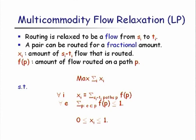We also have a variable F(P) for every SiTi path P, indicating how much flow is carried on path P. The goal is to maximize the sum of Xi — the total flow routed. The main constraint is that for any edge E in the graph, the total flow on paths passing through E must not exceed 1, implementing the edge-disjoint condition.